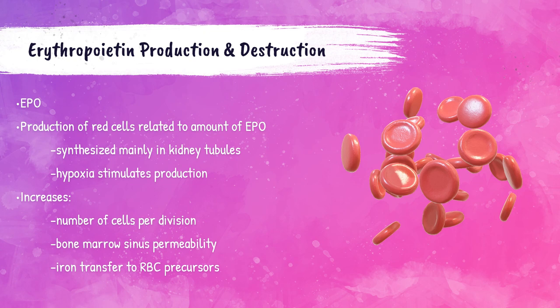Red blood cells are responsible for carrying oxygen to tissues. So if the body's oxygen begins to decrease, that hypoxia is going to trigger the production of EPO and in turn the production of red blood cells. In addition to red blood cell production, EPO also helps to increase the number of cells produced per division, increases the permeability of the bone marrow sinus, and also increases the transfer of iron between precursors to red blood cells.